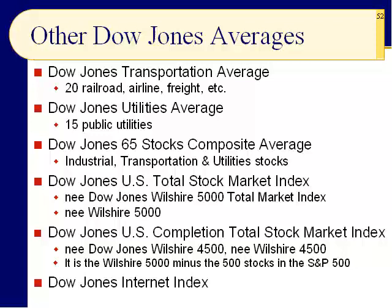Slide 52: Dow Jones also has other averages and indexes. For many years people have looked at the Transport Average — 20 railroad, airline, and freight companies. It's an average because there are only 20 companies. The idea is that before stuff gets sold, it's got to get where it needs to go. So they look at the transport average as a proxy — a substitute or indicator of what's going to happen six to nine months from now. The utilities average is only 15 companies. Put all three together and you get the composite average.